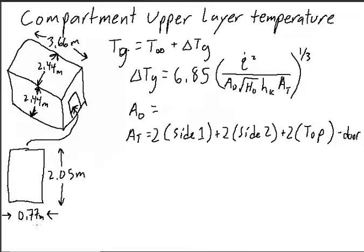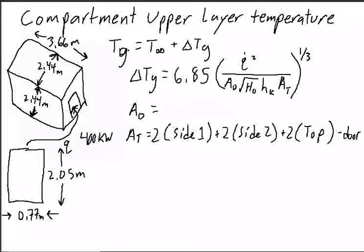The compartment has a door 0.77 meters wide and 2.05 meters tall. And we have a fire with a heat release rate of 400 kilowatts. So that is q dot equals 400 kilowatts.